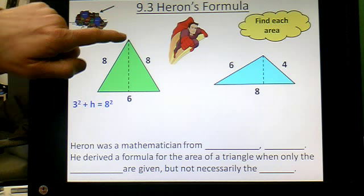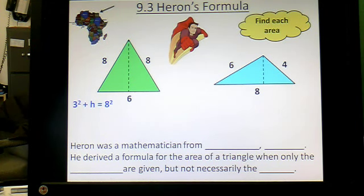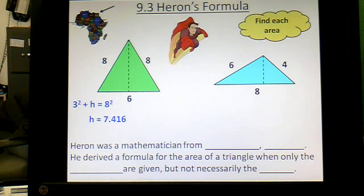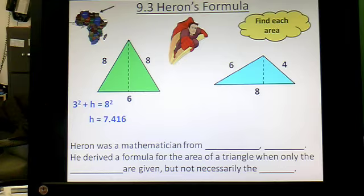3 squared plus h squared would give you 8 squared. And if you leave that answer exact, you know, I think 64 minus 9 is 55, you get square root of 55. And the square root of 55 is approximately 7.4. So there's my approximate height.